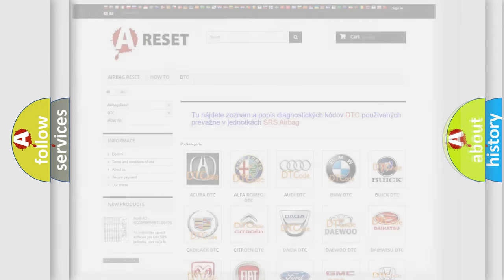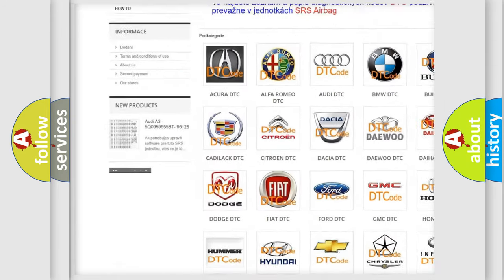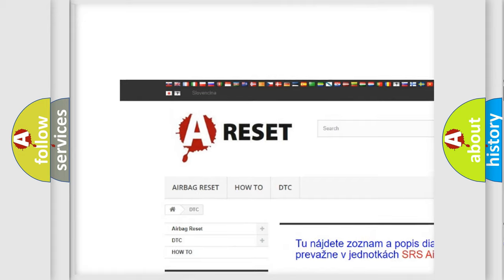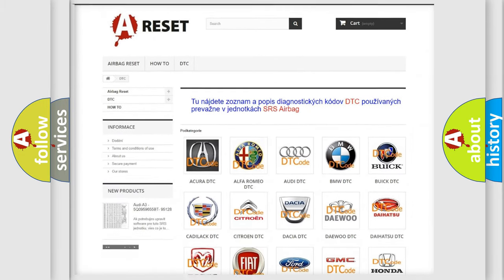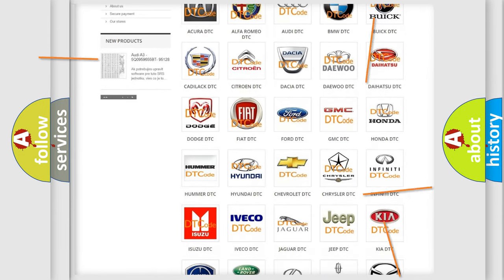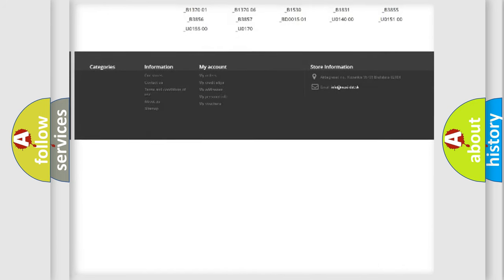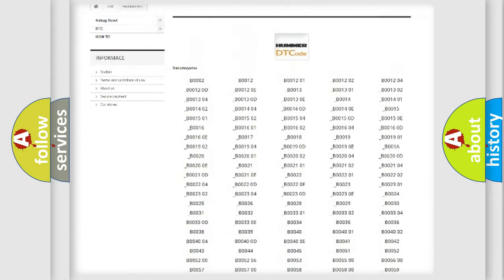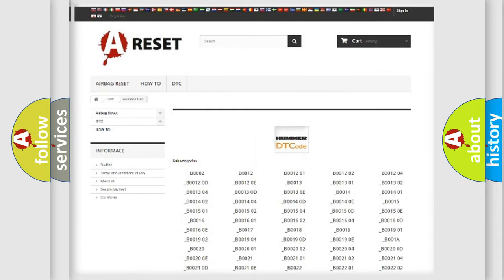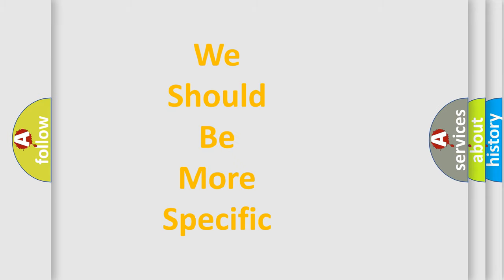Our website airbagreset.sk produces useful videos for you. You do not have to go through the OBD-II protocol anymore to know how to troubleshoot any car breakdown. You will find all the diagnostic codes that can be diagnosed in vehicles, and many other useful things. The following demonstration will help you look into the world of software for car control units.